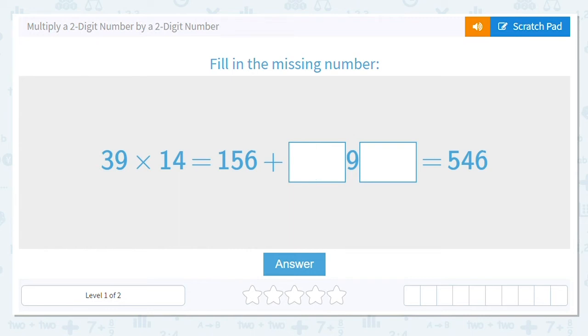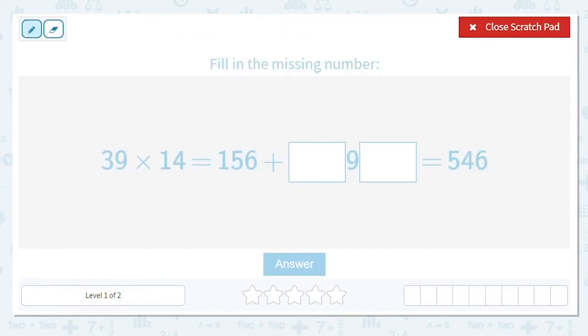All right, let's practice multiplying two-digit numbers by two-digit numbers. Now I see 39 times 14 equals 156 plus some number with a 9 in the tens place, which gives us a total of 546. I'm going to set this up a little bit differently because that's overwhelming to me. That's a lot of information, so I have 39.